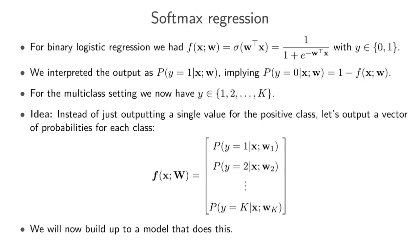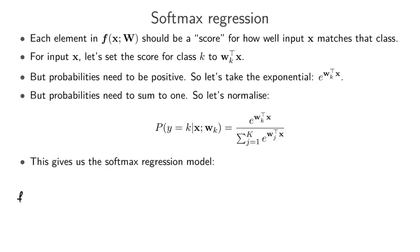We haven't actually defined the model yet — I haven't told you about the internals of how you get each output element. What we're going to do is build up to the softmax regression model starting from binary logistic regression and extending it to the multi-class case. The model takes input x and has a parameter matrix W, which is basically all of the parameter vectors stacked into one big matrix.